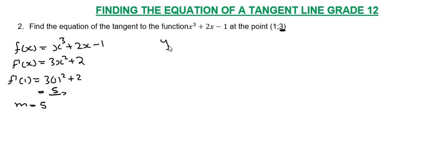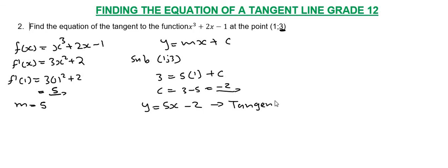Using the equation of a straight line, y equals mx plus c. Substitute the point (1, 3) and gradient 5: 3 equals 5 times 1 plus c, so c equals negative 2. Therefore, y equals 5x minus 2. That's the equation of the tangent line.